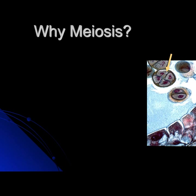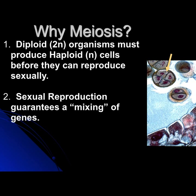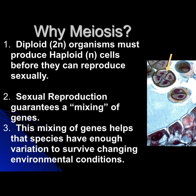Why meiosis? Two diploid organisms must produce haploid cells before they can sexually reproduce. Imagine if we're humans with 46 chromosomes and we didn't reduce our numbers — the next generation would have 92, the generation after that 184, and so on. We have to get our diploid number down in half so that a cell and a cell from another individual can join — that's how sexual reproduction occurs — to make a normal new member of the species with 46 chromosomes. Sexual reproduction guarantees a mixing of genes, and this mixing helps the species have enough variation to survive changing environmental conditions.